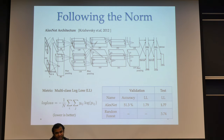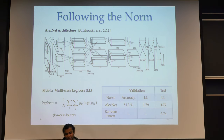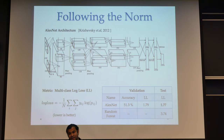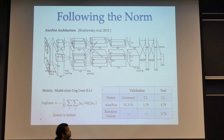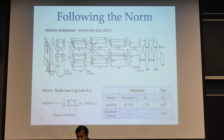Since the test server doesn't calculate accuracy, we divided our train set into two sets: we used 90% of our train set to train the network and 10% as a validation set. AlexNet achieves only 50% accuracy, so there is a lot of room for improvement. We decided to build our own architectures.